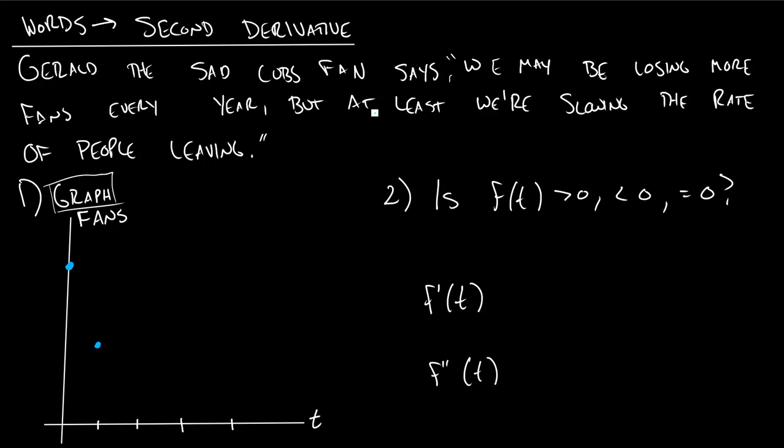But what Gerald is saying is, we're losing fans from year to year, but we're not losing them as fast as we were before. So they're losing them really fast here. And so what Gerald is saying, well, we're still going to lose fans this next year. We're not going to gain more fans, but it's just not going to be as big as a dip as it was here. Maybe it'll be down to here.